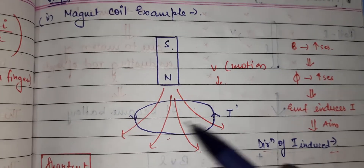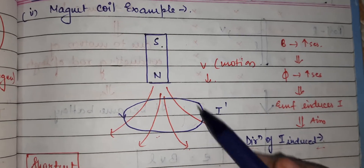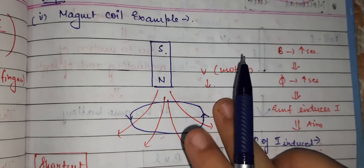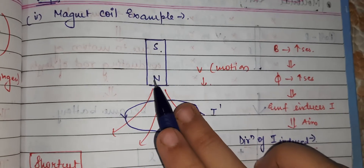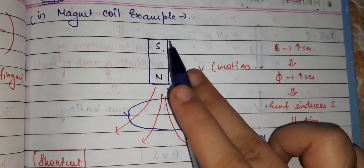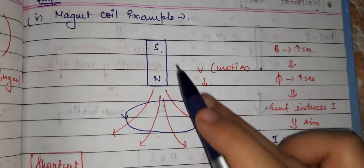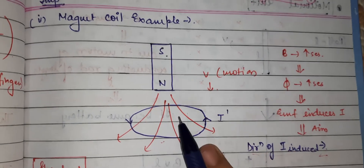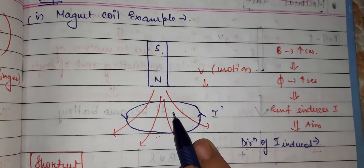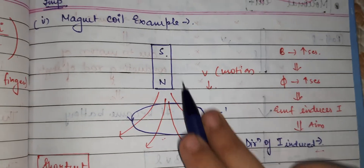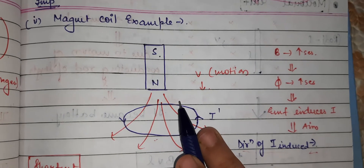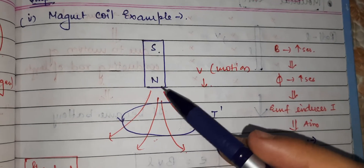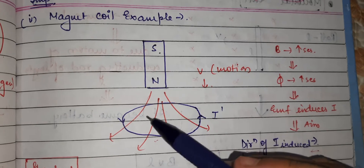We take a current loop. We have taken a bar magnet whose north pole is on one side and whose south pole is on the other side. What we are doing is trying to move the bar magnet towards the loop. One thing we should know is that a bar magnet has magnetic field lines generated by itself.